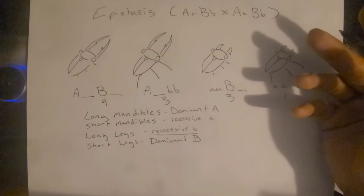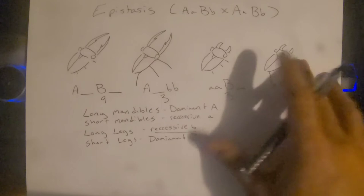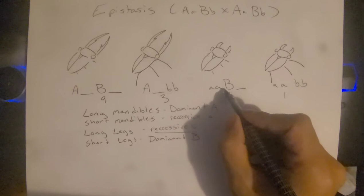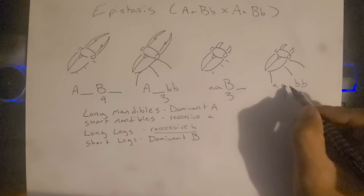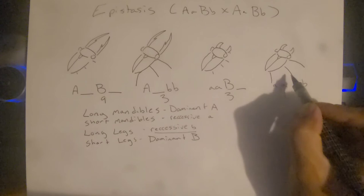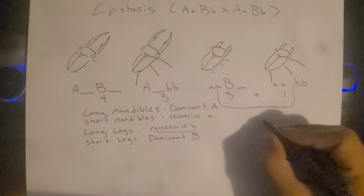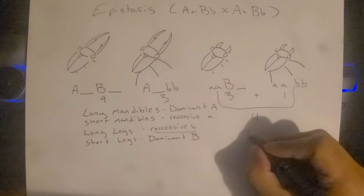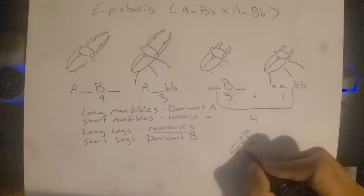If everything goes as predicted it'll just be normal, but what epistasis means is that essentially if a gene here modifies the phenotype of the progeny so that long legs cannot be produced, these two would end up combining to make a larger ratio of short mandibles and short legs.